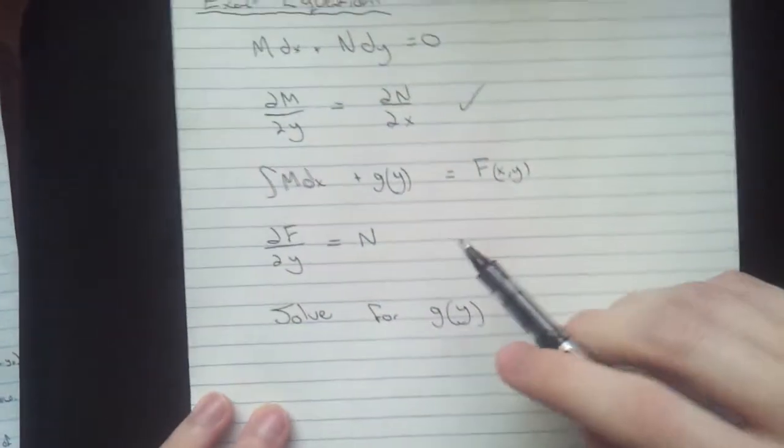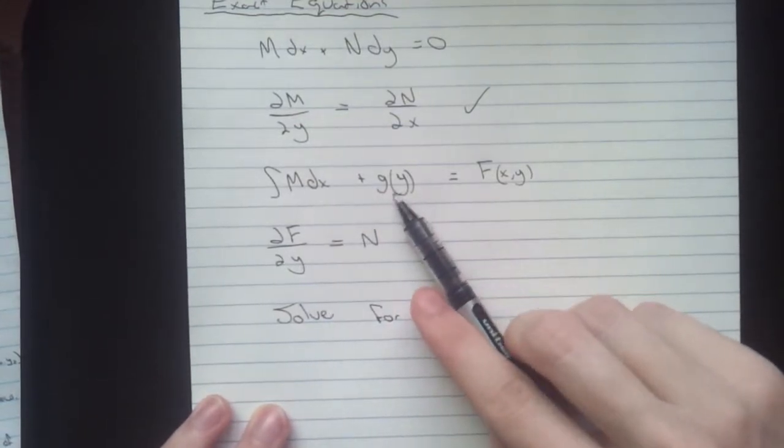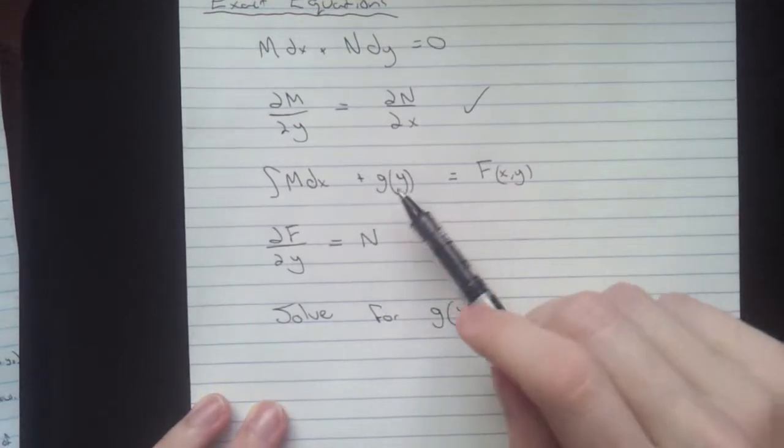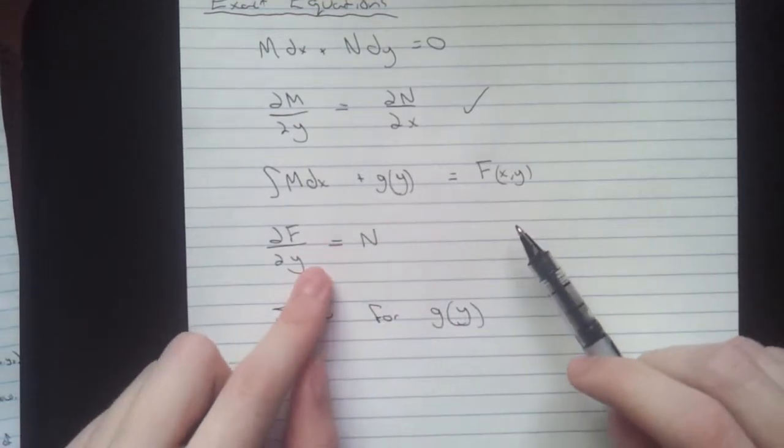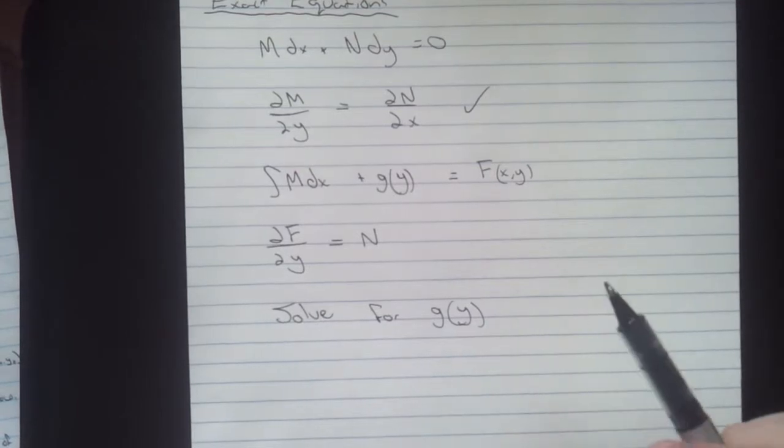So remember, after you took your derivative up here, this is going to turn into g prime of y. So you'll have to separate that, get it in terms of everything else, and then integrate it back to get g of y. After you've done that, you're pretty much done.